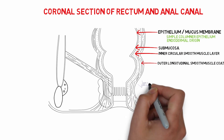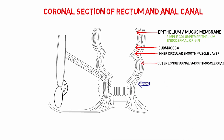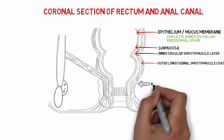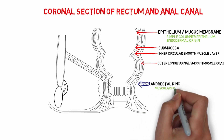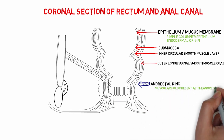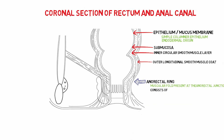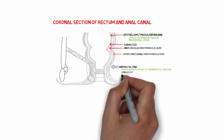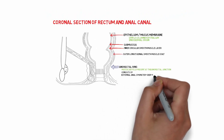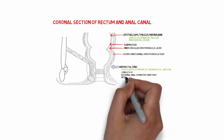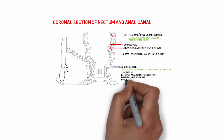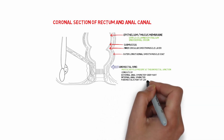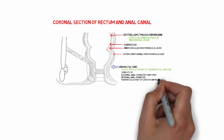At this level there is a muscular fold called the anorectal ring. It is formed by the fusion of three muscles: the deep part of the external anal sphincter, the internal anal sphincter, and the puborectalis part of the levator ani muscle.